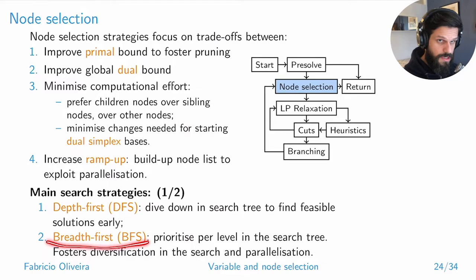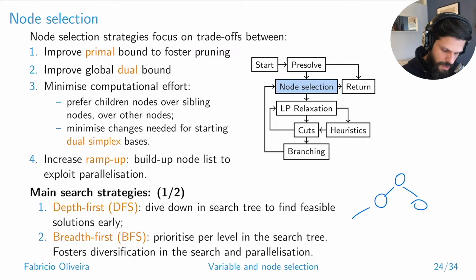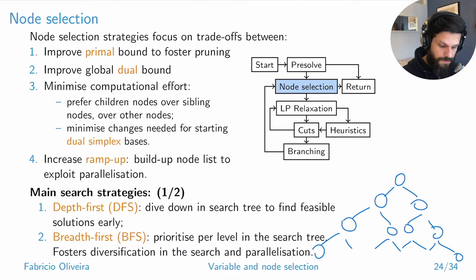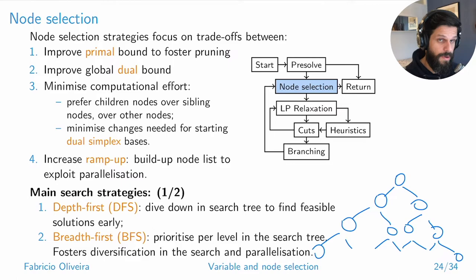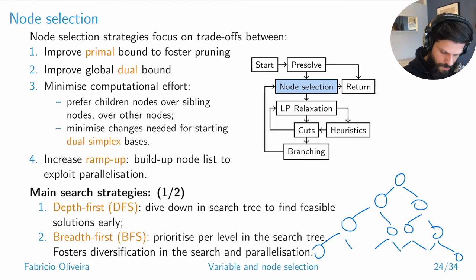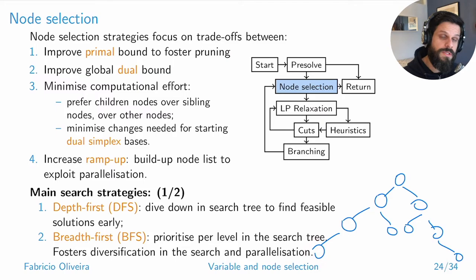Breadth first is the opposite: you solve all nodes at one level, then open and solve all nodes at the next level. The advantage is that nodes at the same level may be sufficiently dissimilar — one might have constraints on variables 1 and 2, another on variables 40 and 41 — making them independent enough to solve in parallel on separate processors.